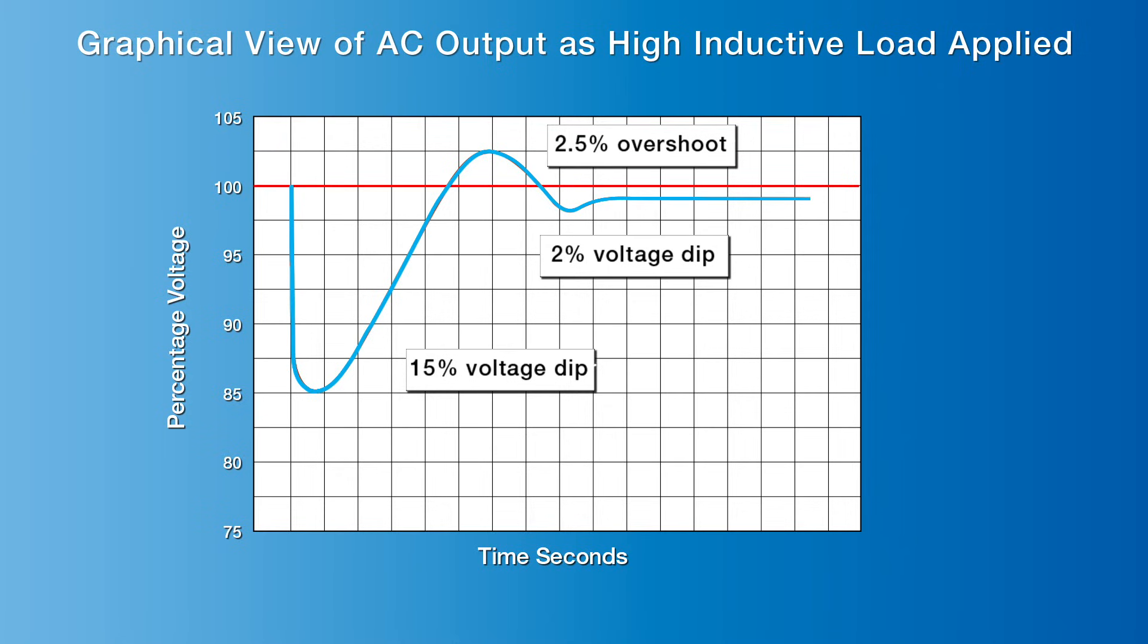During the starting phase, the self-excited generator's reference voltage to the AVR drops, and the AVR will feed more DC volts to the exciter coils to increase the main rotor's magnetic field to increase stator output voltage.